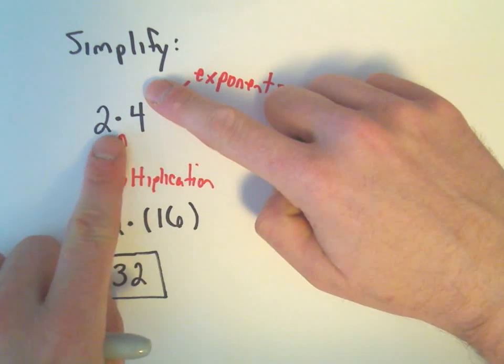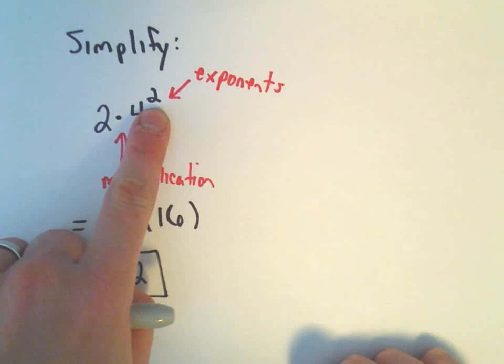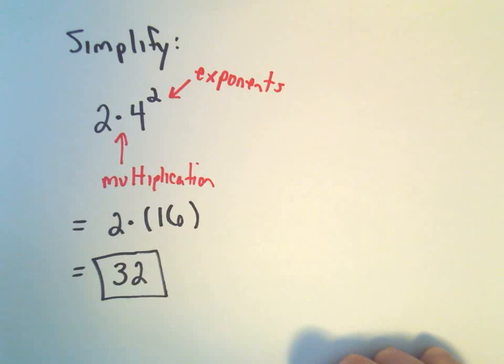Notice if we multiplied first and got 8 and then squared it, we would have got 8 times 8, or 64, which is clearly something totally different. So again, this is why we have to have this uniform procedure. So 32 is our correct answer.